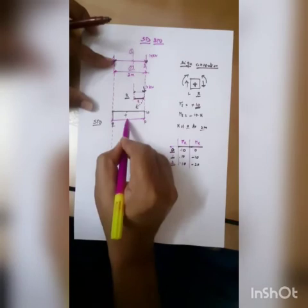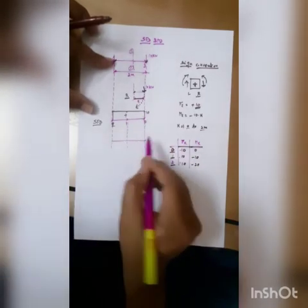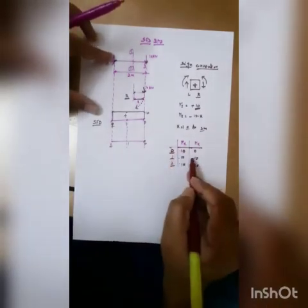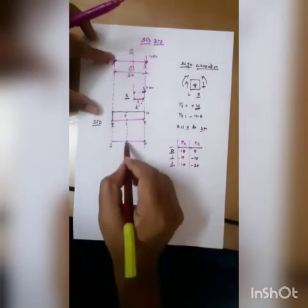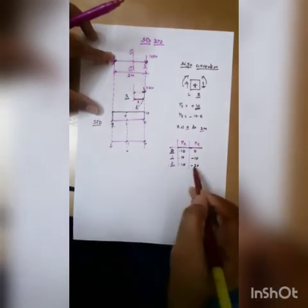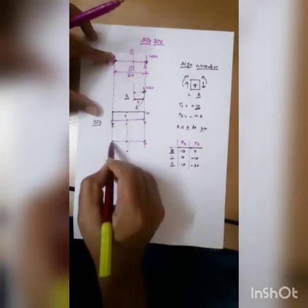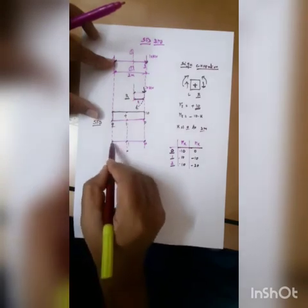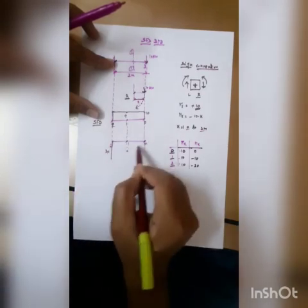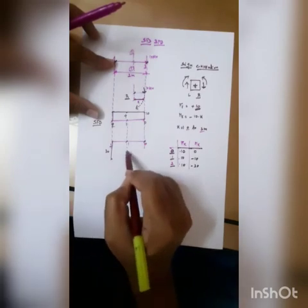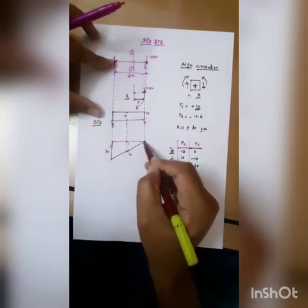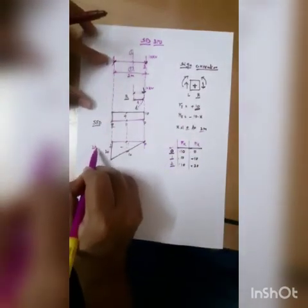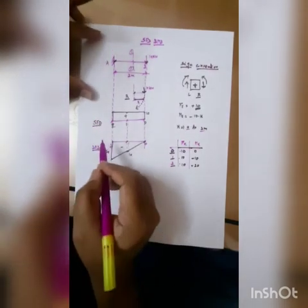Next, let us sketch the bending moment diagram. Extend this portion and mark 0 meter, 1 meter, and 2 meters. M at 0 is 0, so start at zero. At 1 meter the value is minus 10, so draw below the reference line at 10 units. At 2 meters it is minus 20, which is almost double — draw below the reference line at 20 units. Connect all three points. Since all values are negative, the bending moment diagram lies entirely below the reference line. This is the bending moment diagram.